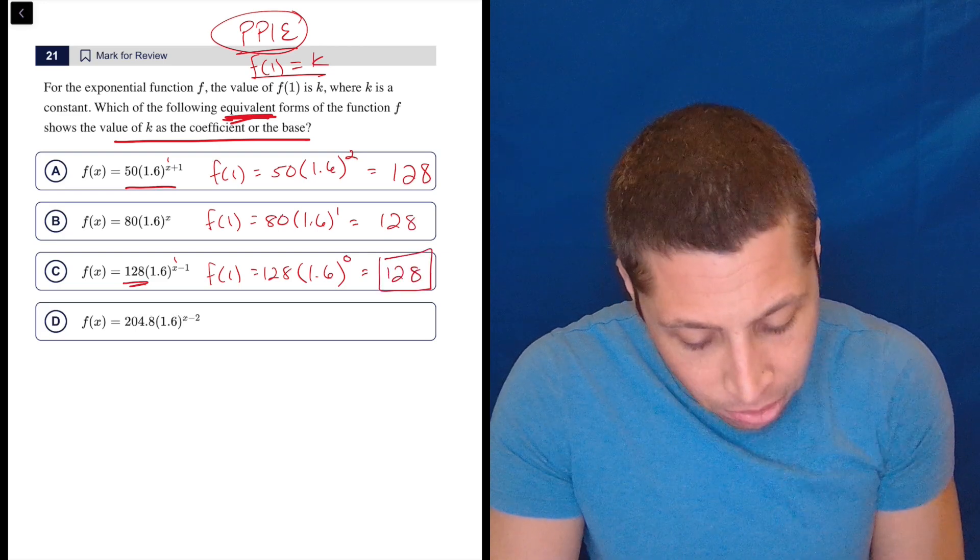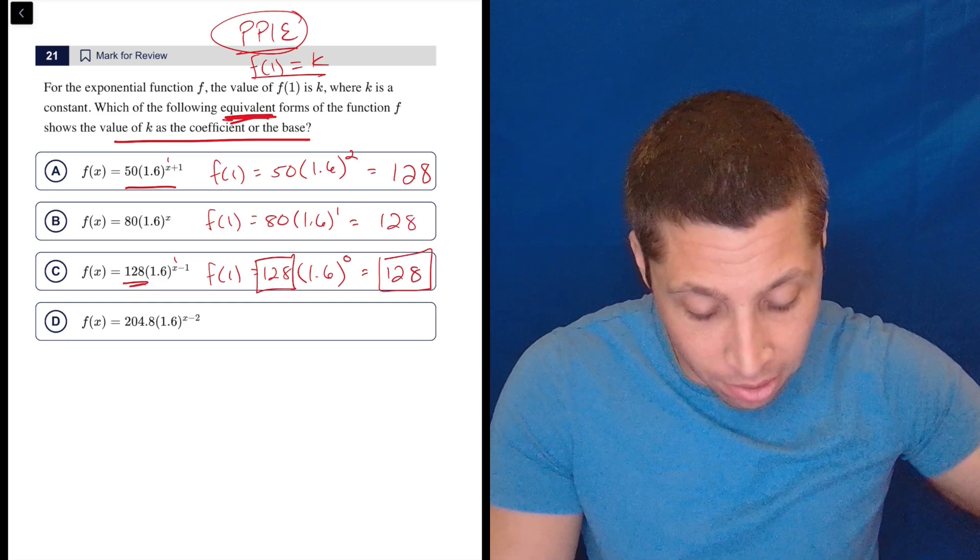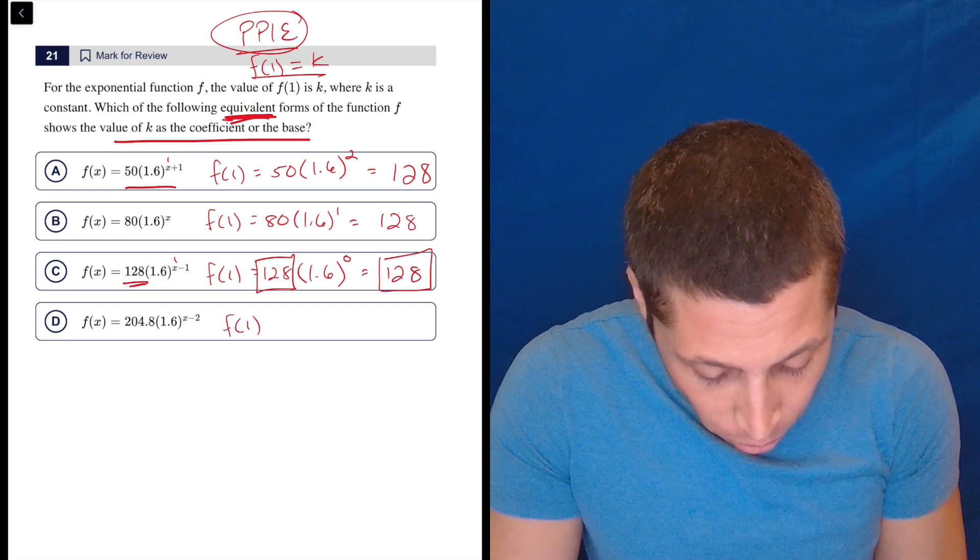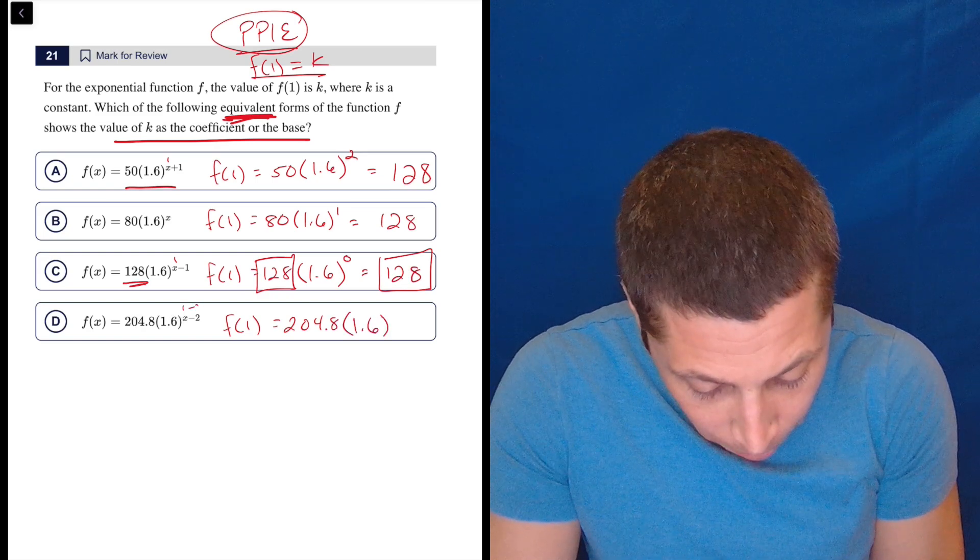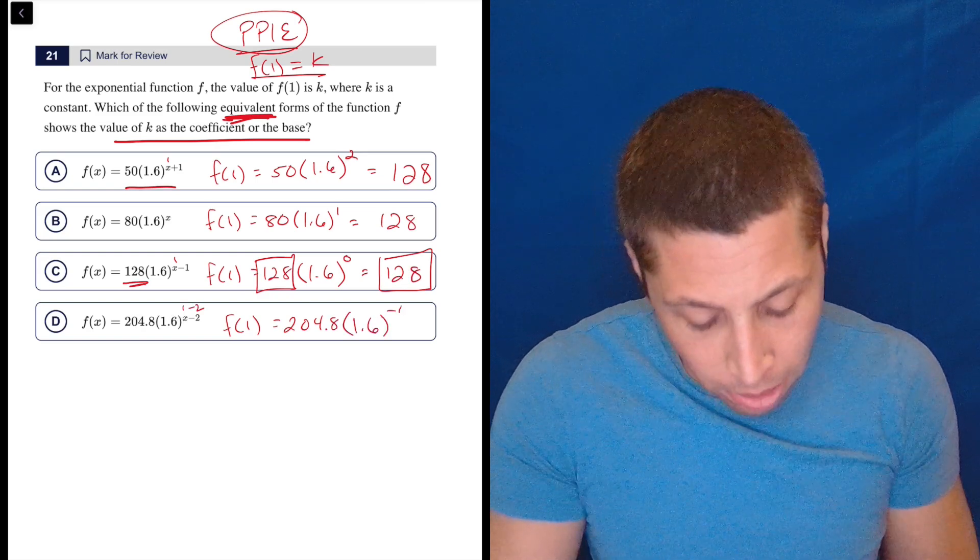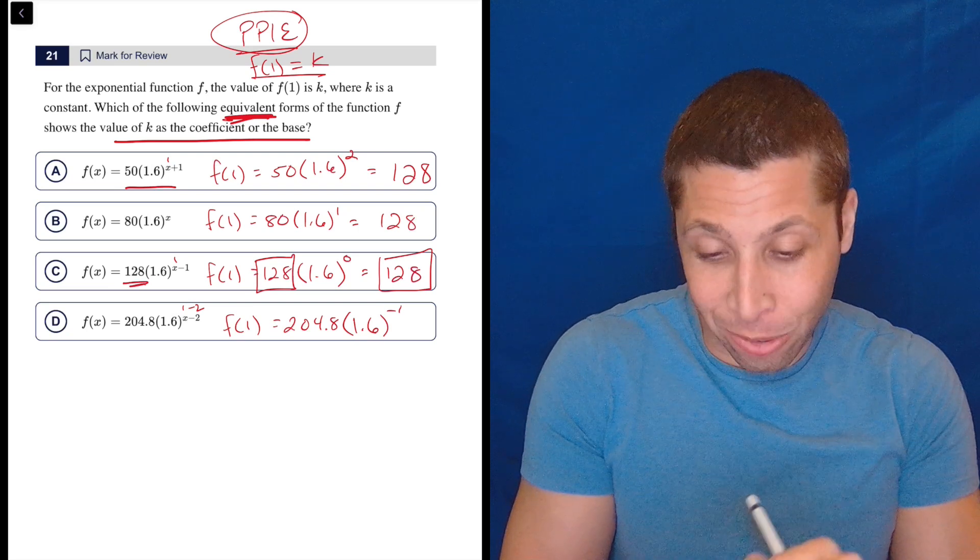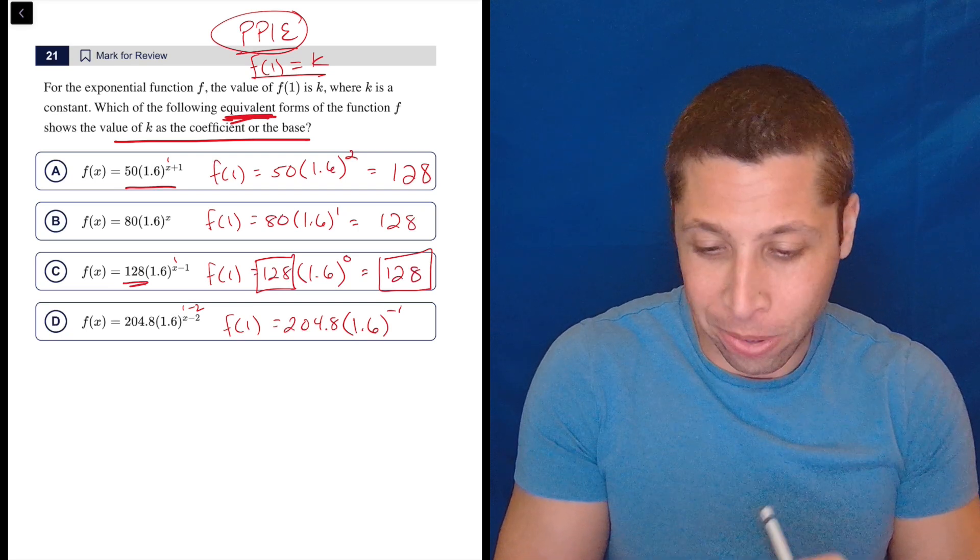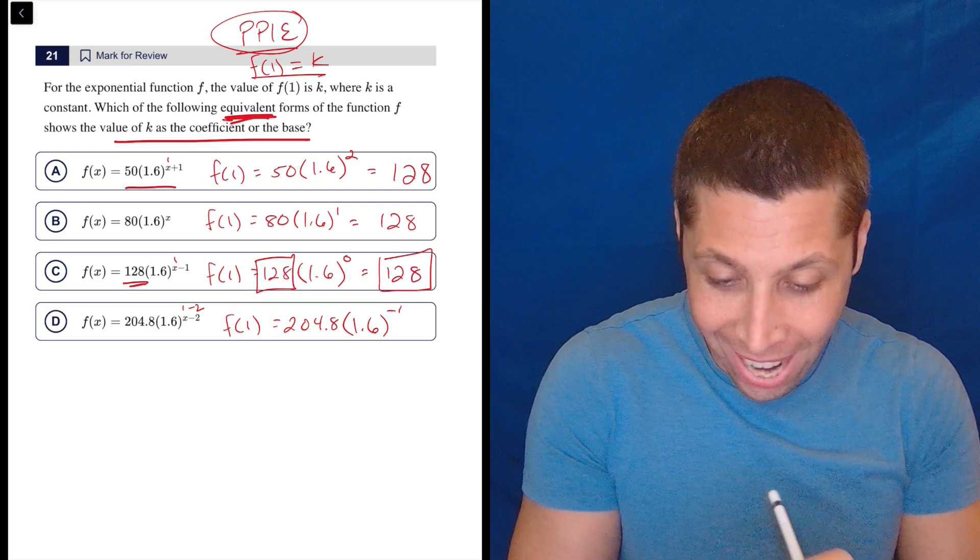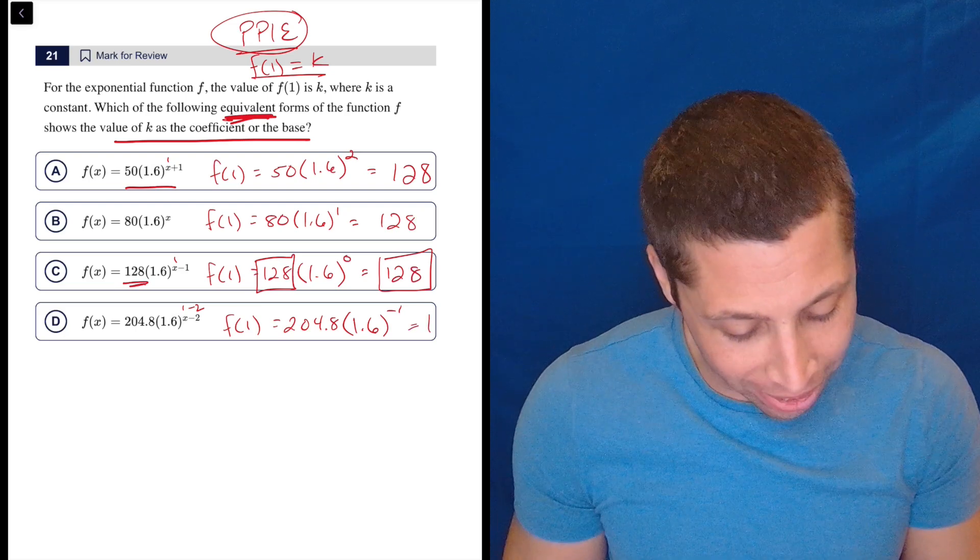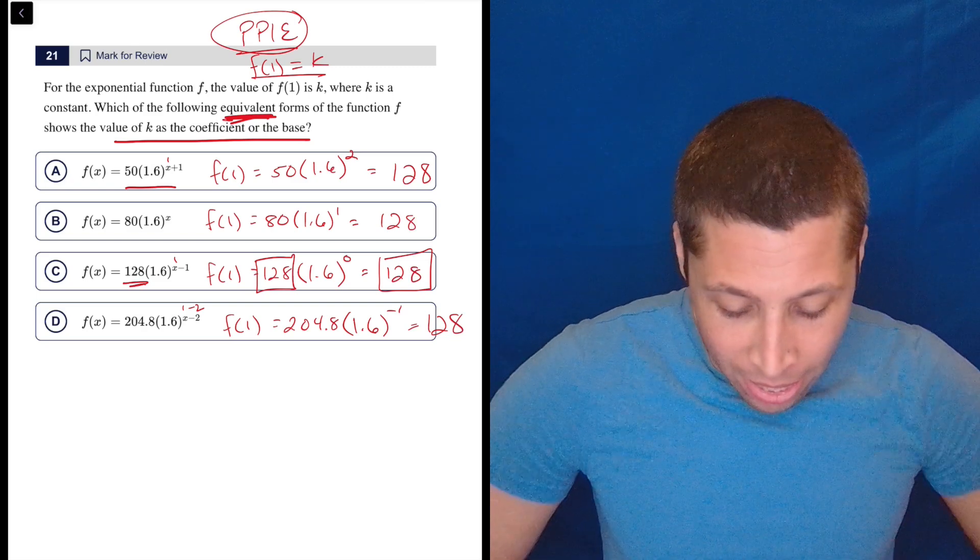So this is just the 128. And look, 128 is my answer. 128 is a coefficient in the equation. This is proof. But just to show you, let's continue. 204.8 times 1.6 to the 1 minus 2, which is negative 1. So 1.6 to the, again, I know the answer is 128. Actually, I think this one doesn't work out quite so well. So 1.6 to the negative 1 times 204.8. Oh, it is. It's exactly 128. I for some reason thought it was going to be a rounded version, but nope, it still works.